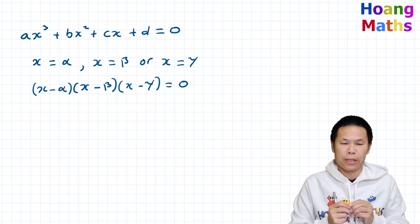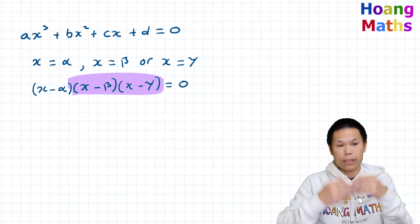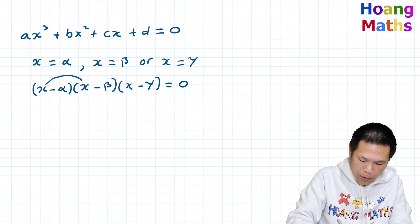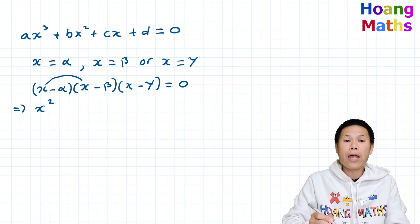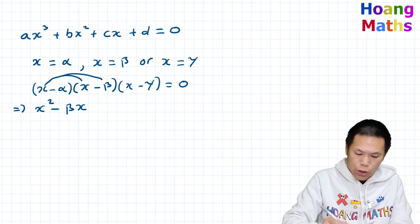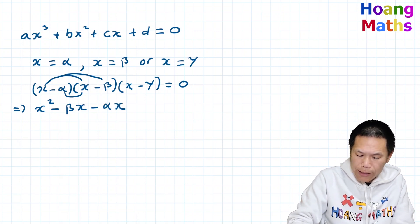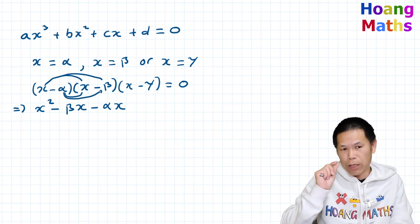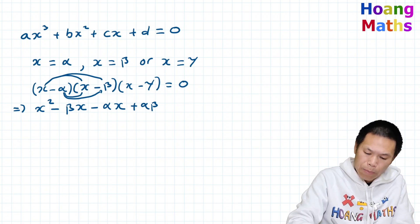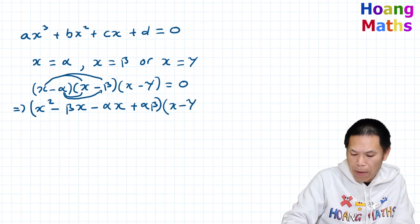So let me expand them out. Expanding from left to right: x times x gives x², then x times (−beta) gives −beta·x, then (−alpha) times x gives −alpha·x, and (−alpha) times (−beta) gives +alpha·beta. So (x − alpha)(x − beta) = x² − beta·x − alpha·x + alpha·beta, and we still have the (x − gamma) factor.